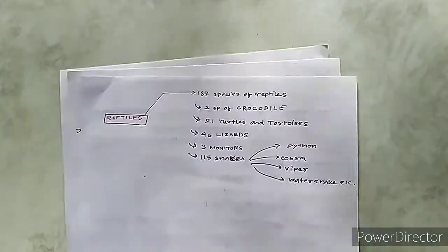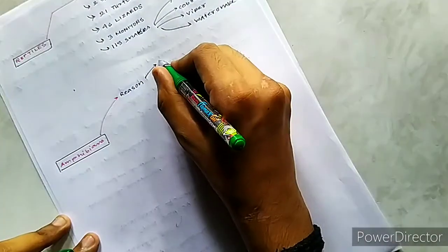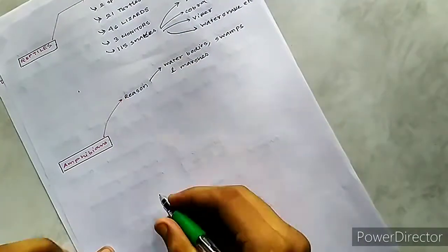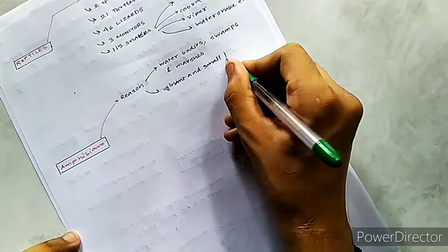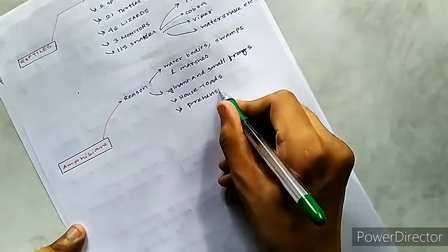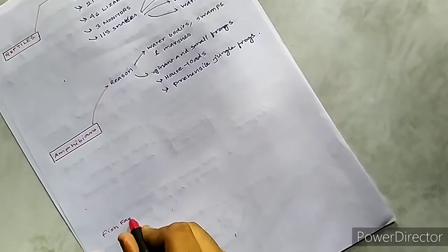The next are the amphibians. In Assam there are abundance of water bodies, beels, swamps, etc., which support the habitat for these amphibians. The amphibian population is very high in Assam. The giant and small swamp frogs, house toads and prehensile jungle toads are the common amphibians having huge populations.